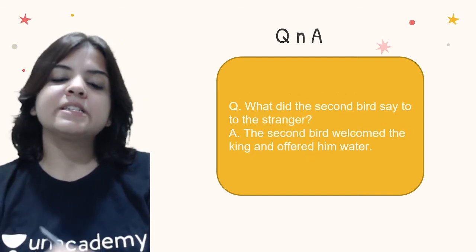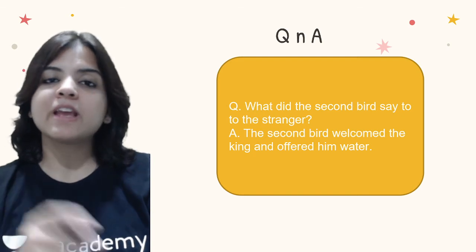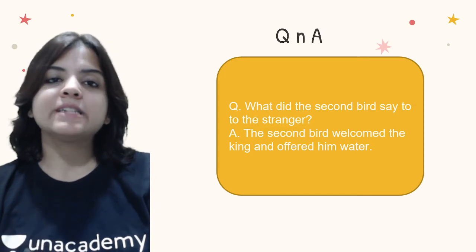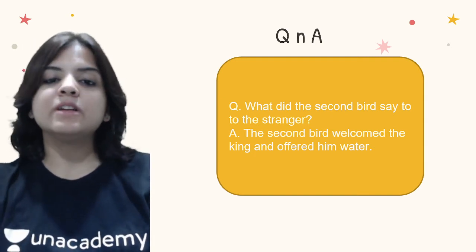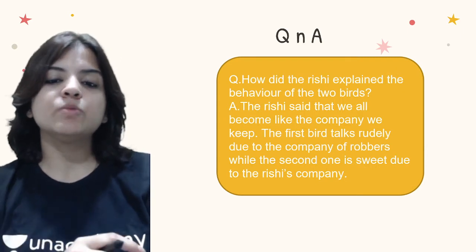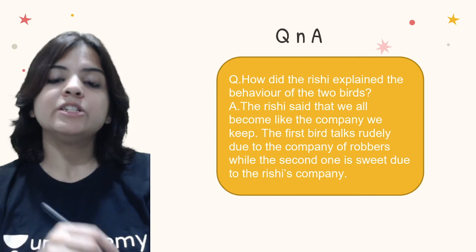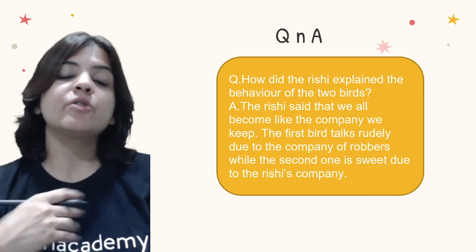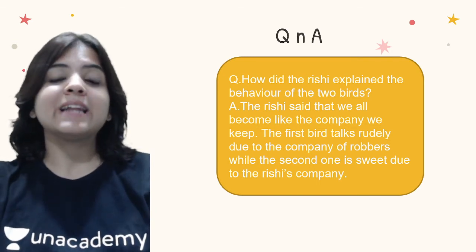Question 4: What did the second bird say to the stranger? The second bird welcomed the king and offered him water, saying 'come inside the ashram, make yourself comfortable, and have some water.' Question 5: How did the Rishi explain the behavior of the two birds? The Rishi said that we all become like the company we keep. The first bird talks rudely due to the company of the robbers, while the second one is kind and welcoming due to the Rishi's company. That was the moral of the story.